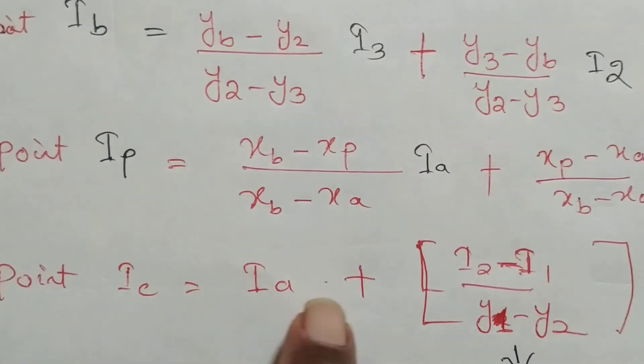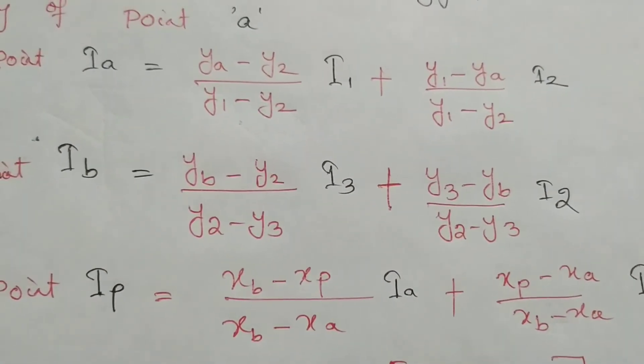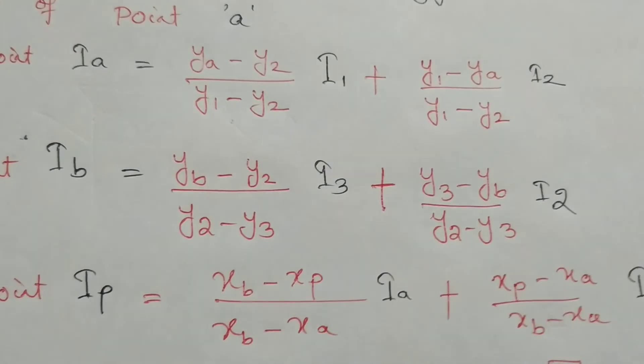Then Ic is also found using similar formulas because it is I2 minus Y1 divided by Y1 minus Y2. This is the whole equation for our Gouraud shading. Hope you have understood.